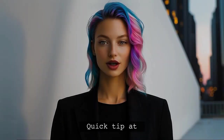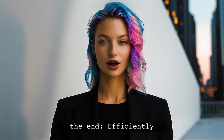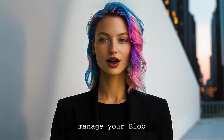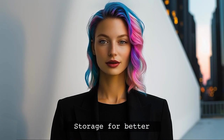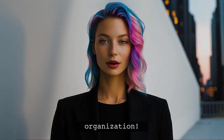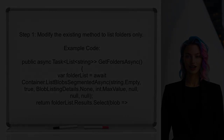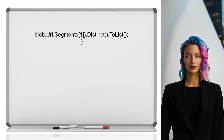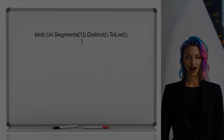And stick around — at the end of this video, I'll share a quick tip on how to efficiently manage your blob storage for better organization. To get a list of all folders in the Azure Blob Storage container, the user should start by modifying their existing method. Instead of listing all blobs, they will focus on listing only the directories.